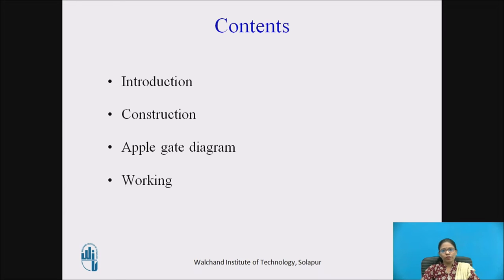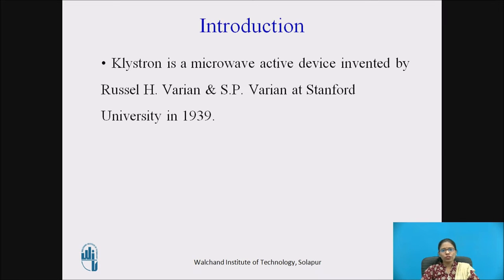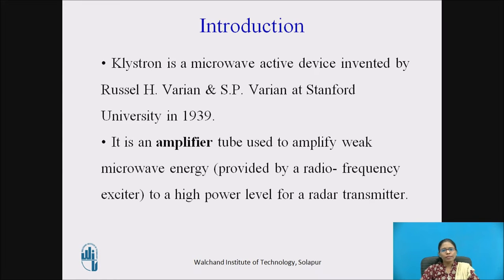Introduction. Klystron is a microwave active device. It was invented by Russell Varian and S.F. Varian at Stanford University in 1939. It is an amplifier tube used to amplify weak microwave energy, which is provided by a radiofrequency exciter. This weak microwave energy can be amplified using a Klystron amplifier to a high power level for a radar transmitter.